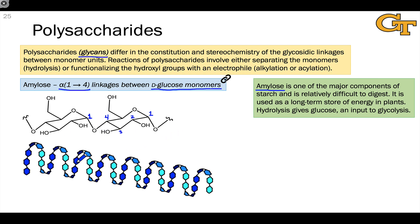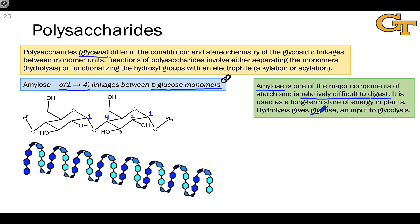This connectivity gives rise to a helical shape for the polysaccharide when you zoom out and look at it from a broader view. Because of its helical shape, it's relatively difficult to digest — it's a component of starch and one that is difficult for enzymes to break into to release the monosaccharide units. But when that hydrolysis occurs to give the monomer units, we get glucose, which is an input to glycolysis — an energy-producing pathway for cells.